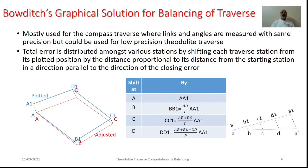We can have this graphical solution for balancing this particular traverse. It is mostly used for the compass traverses. However, if we are also dealing with certain theodolite traverse of inferior works, we can make use of this graphical solution. Here, the total error is distributed among various stations by shifting each traverse station from its plotted position by the distance proportional to its distance from the starting station, in a direction parallel to the direction of the closing error.